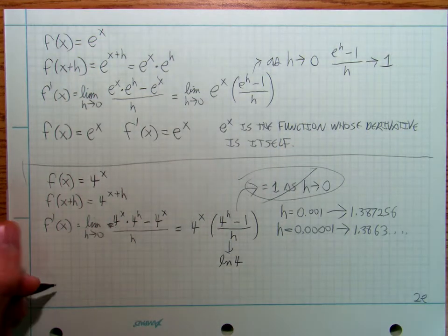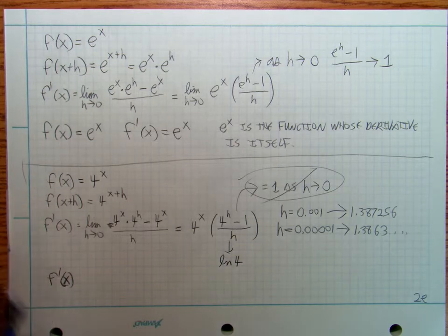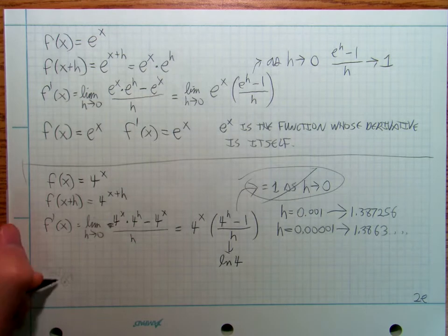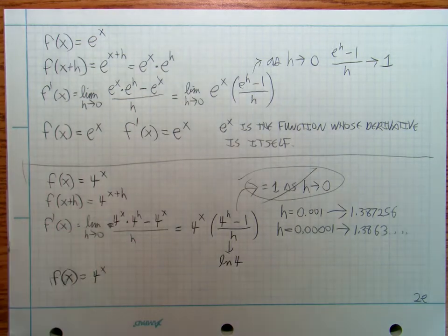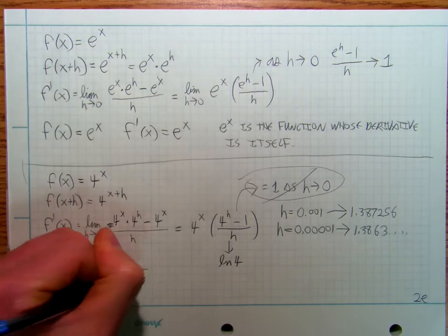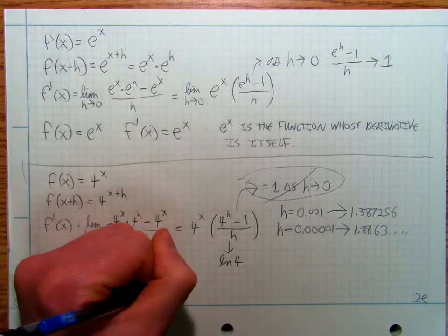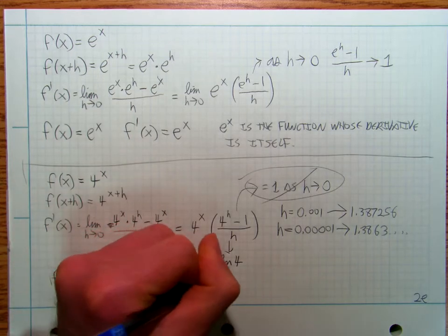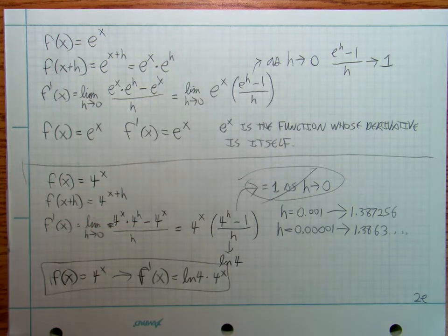So what that's saying is that this is ln of 4. And so f'(x)... So let's do this out. So f(x) equals 4^x means f'(x) is equal to the ln of 4 times 4^x. And then the last thing I'm going to say in this video.